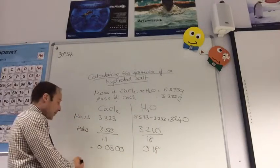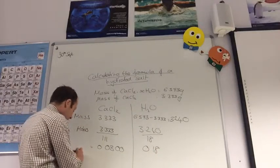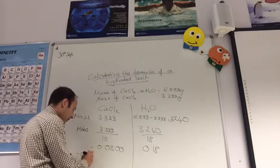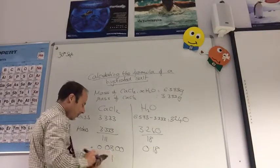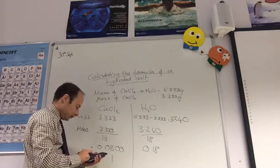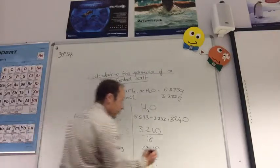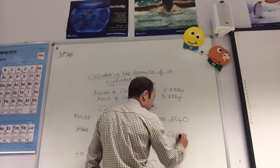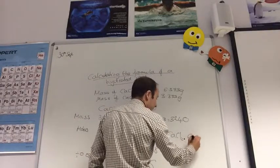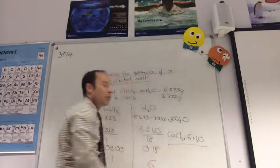You then do the same. Divide by the smallest one. So I'm going to divide both by 0.03. And that equals 1. And that equals 6. So the formula therefore is CaCl2·6H2O.